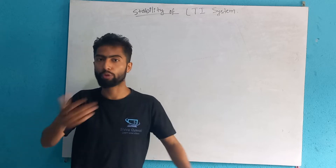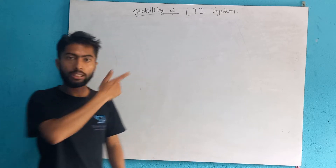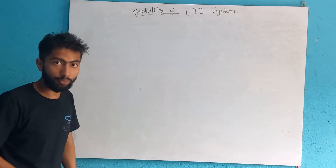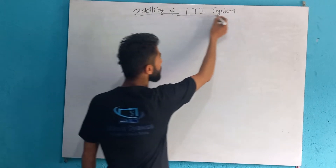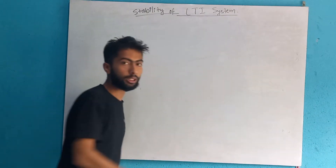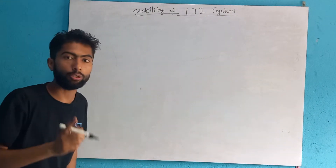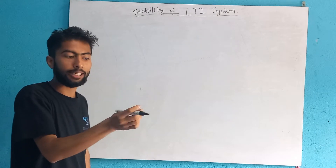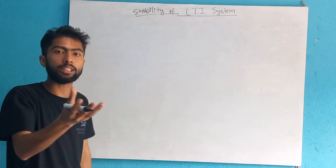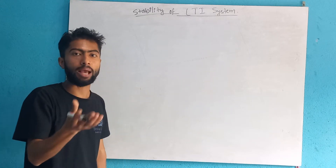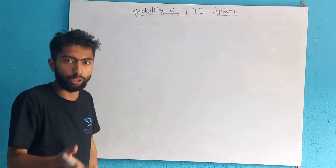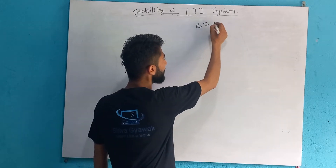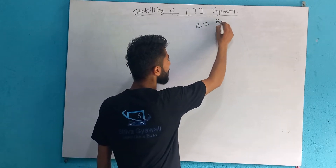The functionally properly made system — this is the stability of reality system. What do we need to do in the system? There is a stable system that we need to work with. We have a stable system with bounded input and bounded output.